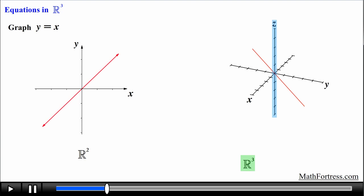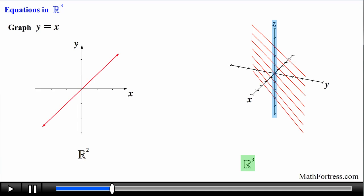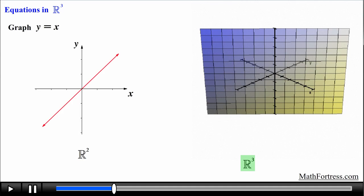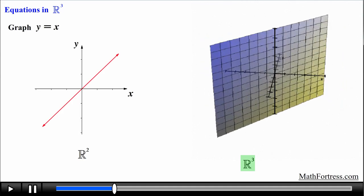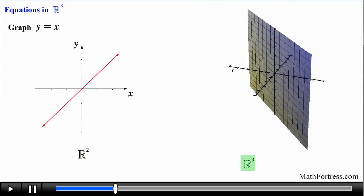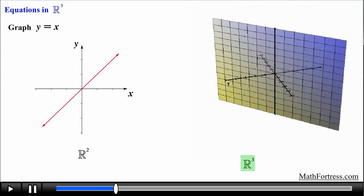This means that any particular value of z will get a copy of this line — both positive values of z such as z equals 1, z equals 2, z equals 3, and so on, and negative values of z such as z equals negative 1, z equals negative 2, and z equals negative 3, and so on. In this sense the graph represents a vertical plane that lies over the line given by the equation y equals x in the xy plane.